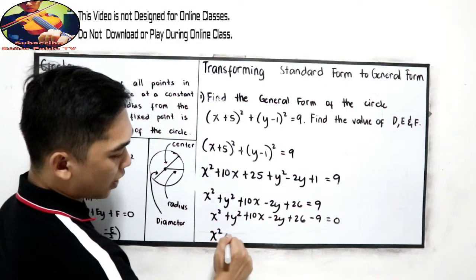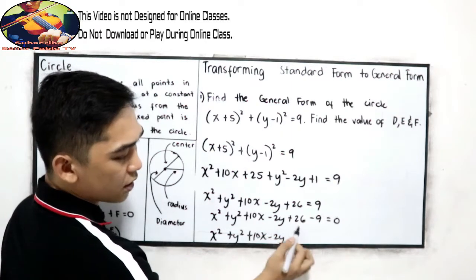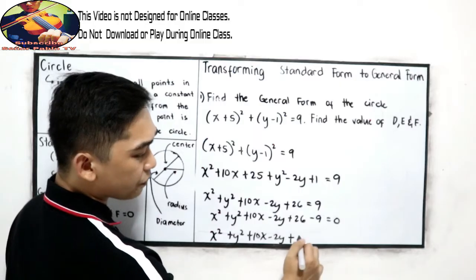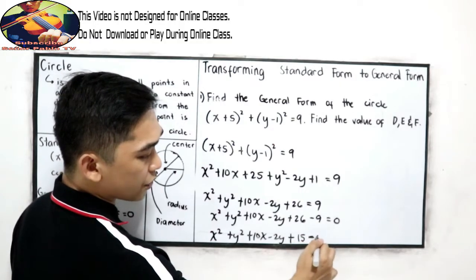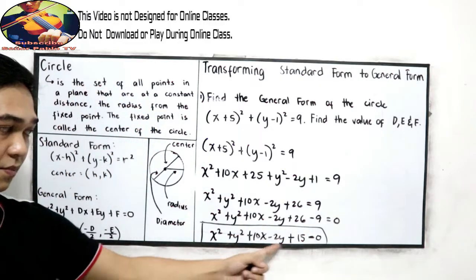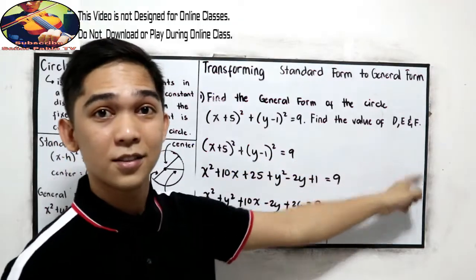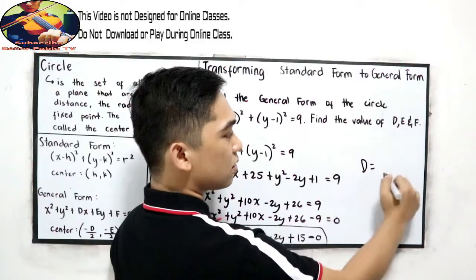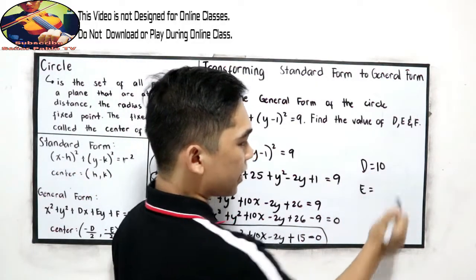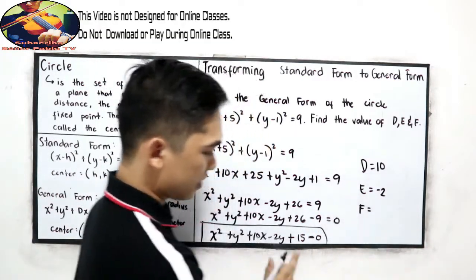So x squared plus y squared plus 10x minus 2y, plus 26 minus 9 — that is positive 17 — is equal to 0. This is now our general form. Find the value of D, E, and F: D is 10, E is negative 2, and F is 17.